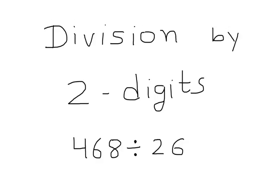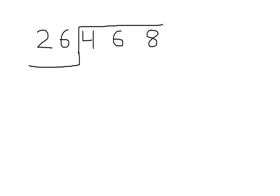Division by two digits example: 468 divided by 26. The method of division will remain the same. You can't start dividing a number less than the divisor, so let's start with a number greater than or equal to the divisor.